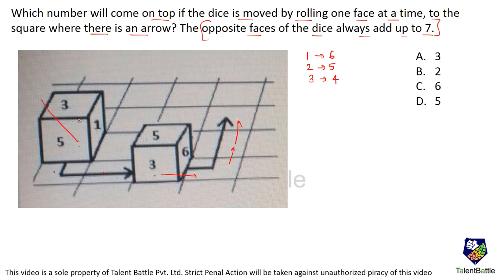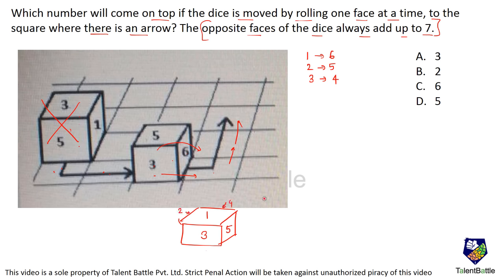We start from the initial dice position and roll it step by step. Rolling in the given direction, the 6 goes to the bottom. Three remains on the side and 5 comes to the front. Opposite to 6 is 1, opposite to 3 is 4, and opposite to 5 is 2. The dice then falls in the next direction, bringing 4 to the bottom and 3 to the top.